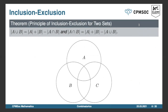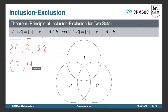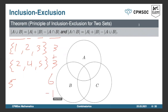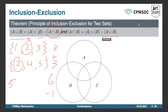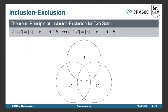The inclusion-exclusion principle for two sets: the size of A union B equals |A| plus |B| minus |A intersect B|. For example, A = {1,2,3} and B = {2,4,5}: their union has size 5, but adding their sizes gives 6 — you must subtract 1 because the element 2 is double-counted. Rearranging gives that the intersection equals the sum minus the union. For two sets this is straightforward.